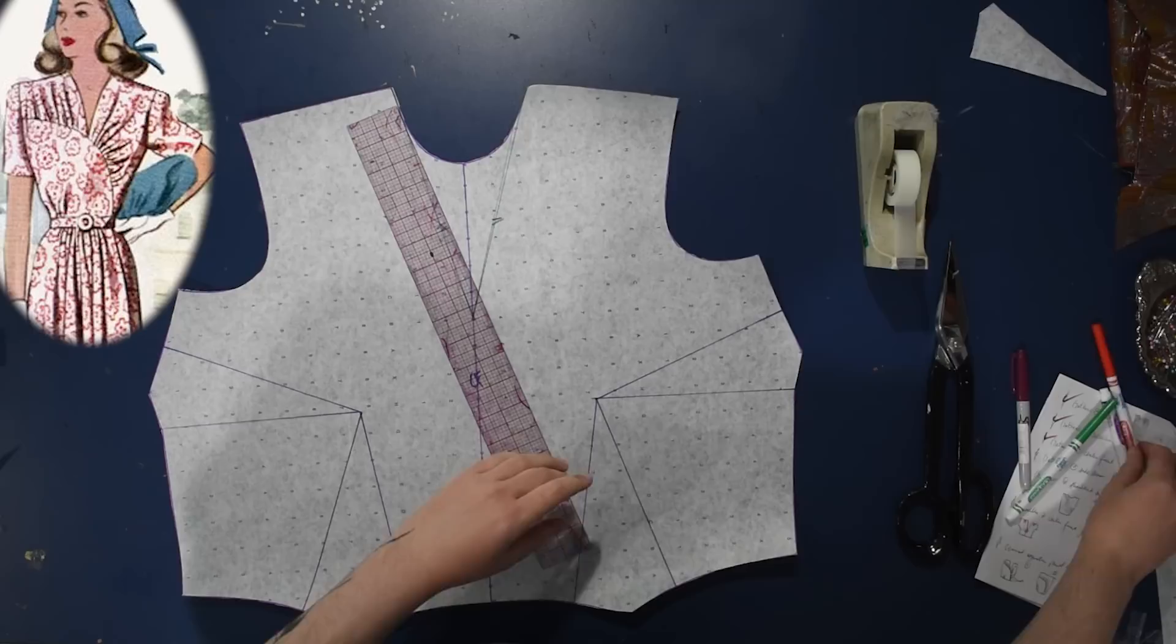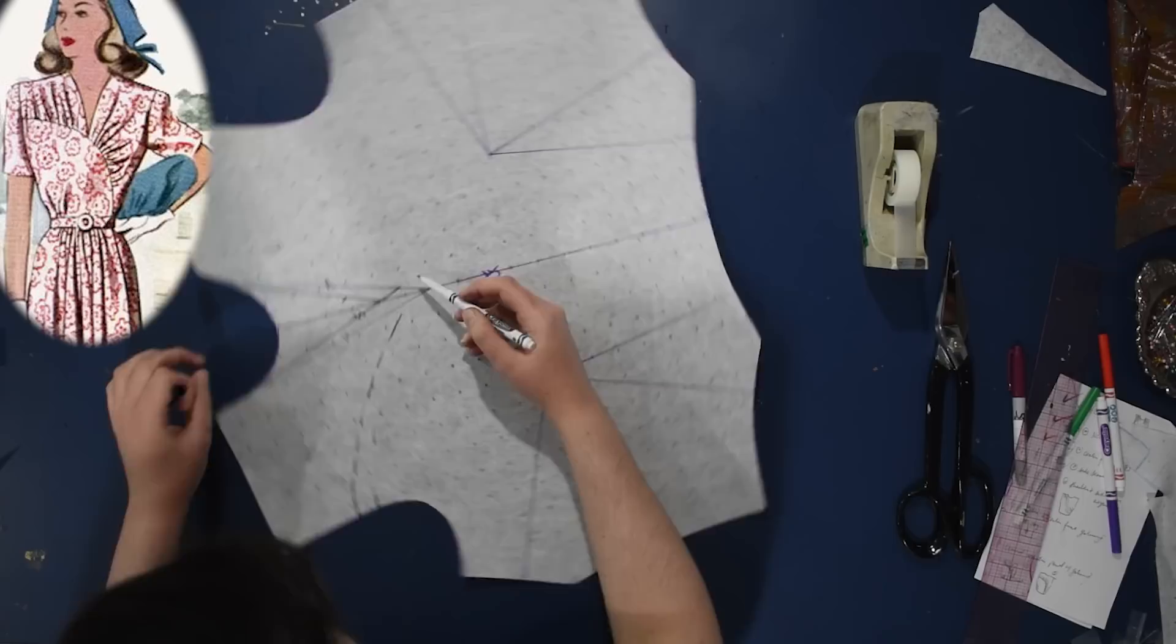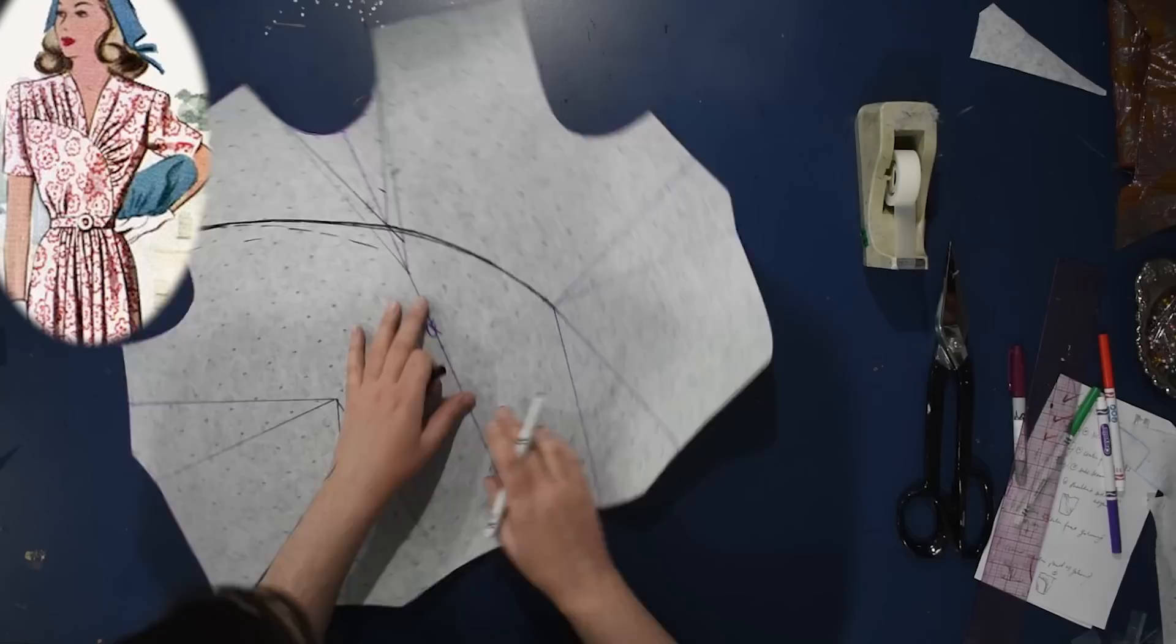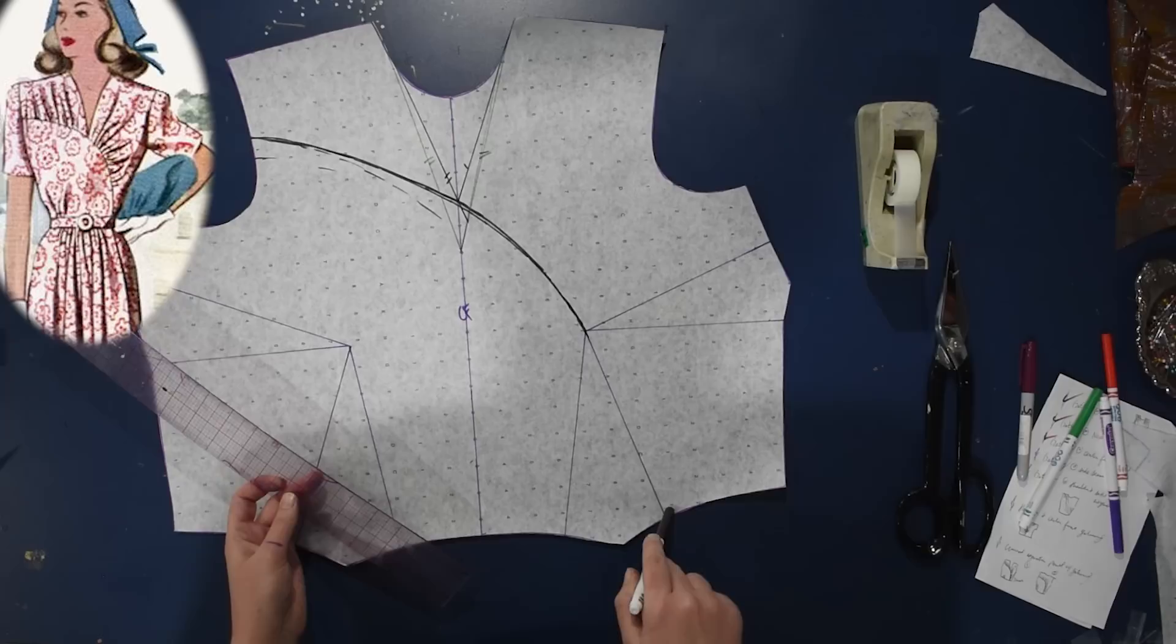I'm going to draw a curved line from the arm side on one side through the point of the v-neck and into the apex of the opposite side, so this asymmetric curve that comes across the bodice here. This will result in a three-piece bodice front, so I'll have a left, a right, and then a separate shoulder as well, so I'll have two pieces on the left and one piece on the right here when I'm done.